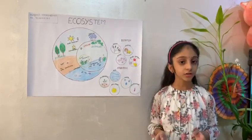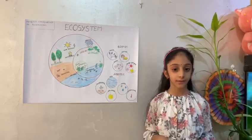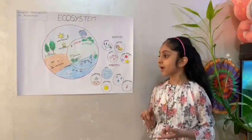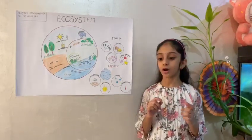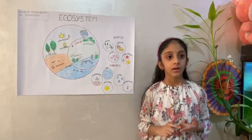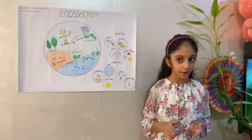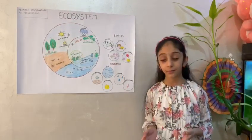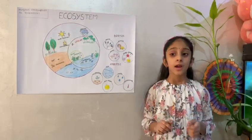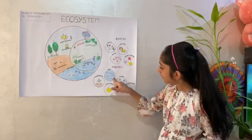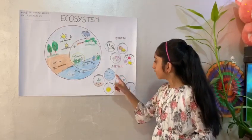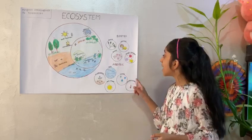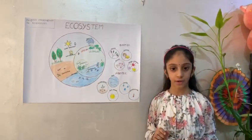Ecosystem includes two major components: biotic components and abiotic components. Abiotic components are the non-living elements of the system such as air, water, nutrients, sunlight, and temperature.